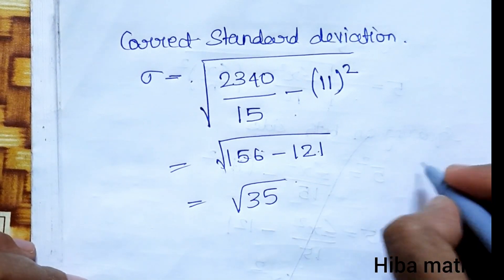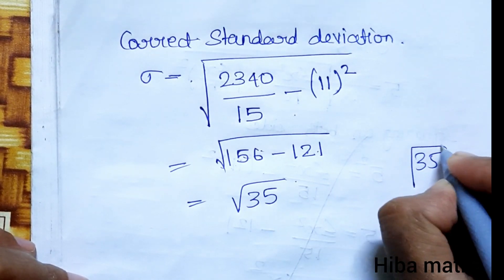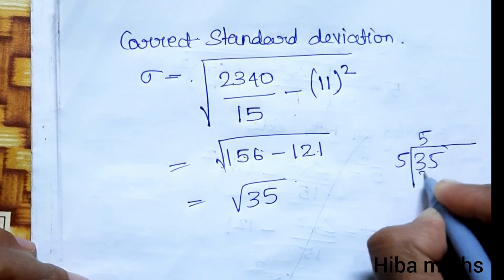We now compute the square root of 35. Finding the square root: 5 squared is 25, so the answer is approximately 5.9.